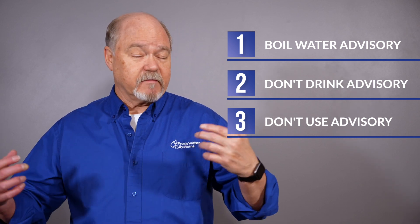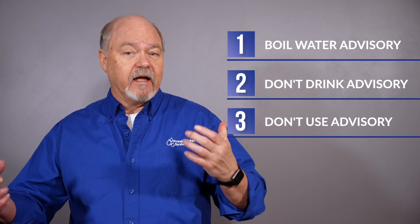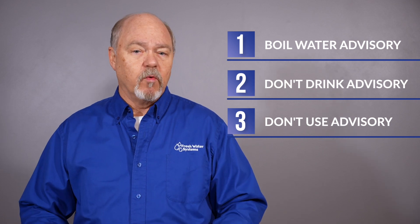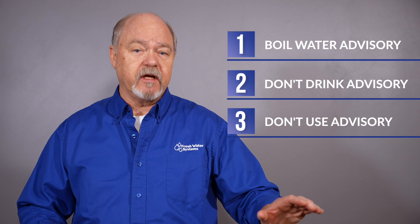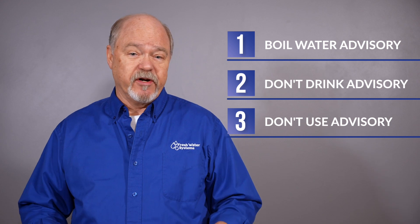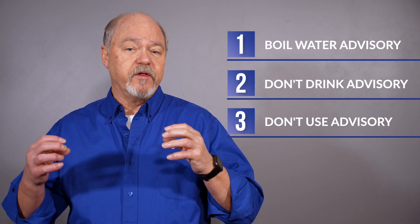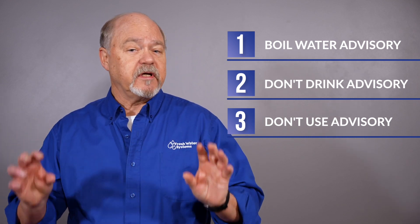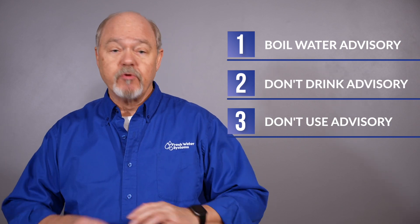There are three different types of advisories or notices that you may receive from your water supplier or community provider. The first is a boil water advisory. The next is a don't drink advisory, where there's something in the water supply that boiling won't eliminate, so they don't want you to drink it even if you boiled it. The third is a don't use advisory, which is pretty serious and incredibly rare — when water quality is so poor due to a chemical problem that they don't want you to get in the water, shower with it, or drink it.